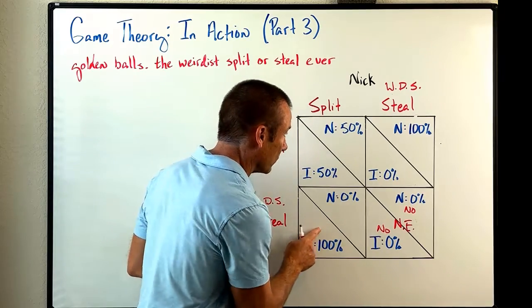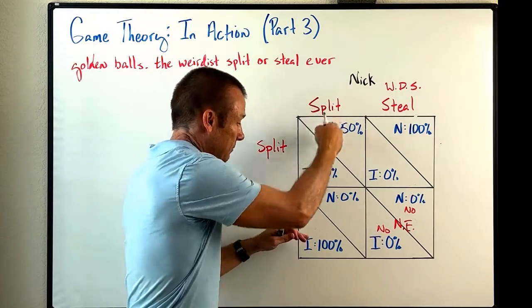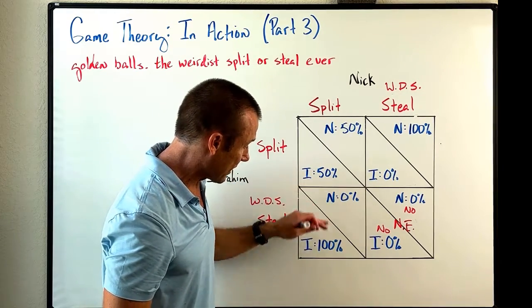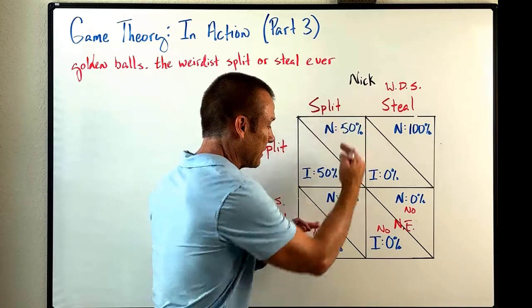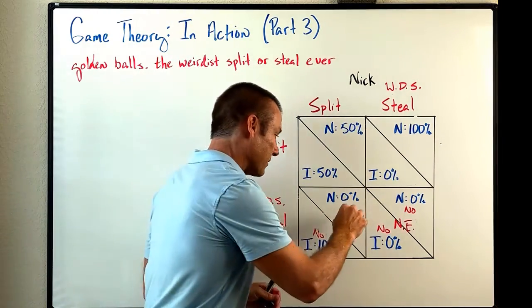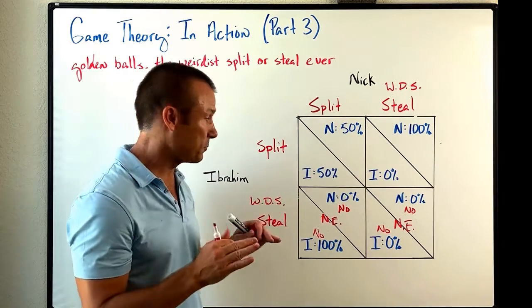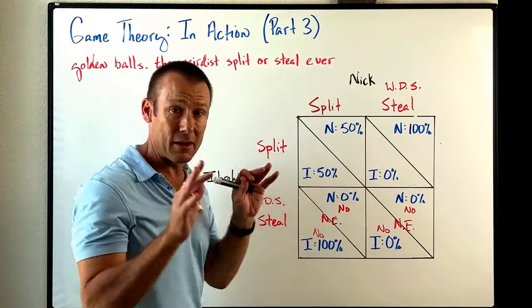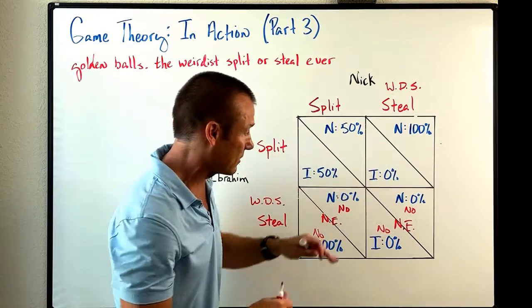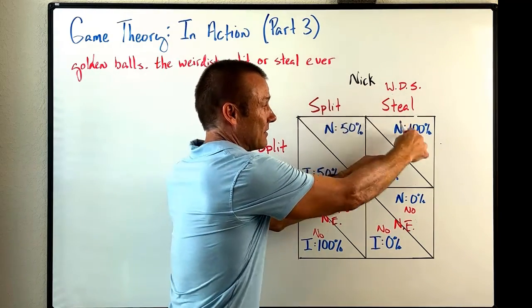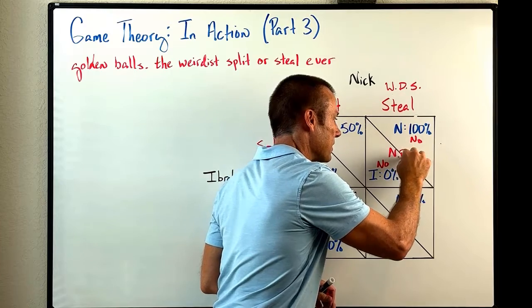Let's go to the next cell. Ibrahim played steal, Nick played split. Given that Nick played split, does Ibrahim have an incentive to change his strategy? We don't want to go from 100% to 50%, so no. And does Nick have incentive to switch from split to steal? No. Another Nash equilibrium. And the next one: Ibrahim played split, Nick played steal. Does Ibrahim have incentive to switch from split to steal — from 0% to 0%? Nope. Does Nick have an incentive to switch from steal to split? No. A third Nash equilibrium.